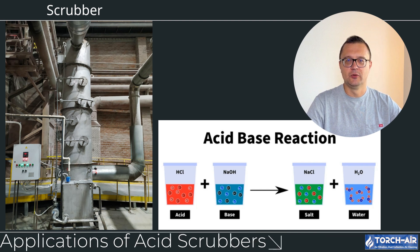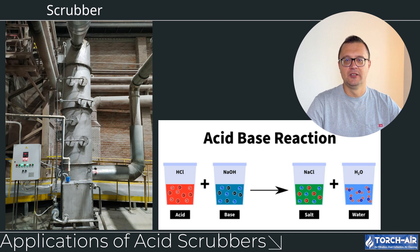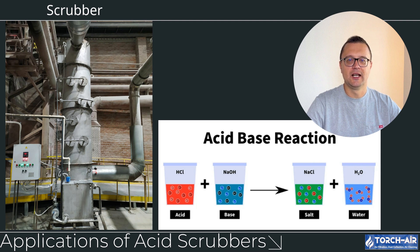Applications of acid scrubbers. Acid scrubbers are used in various industries that produce harmful acid gases during manufacturing processes, including: chemical processing plants for the removal of HCl and other acidic emissions; power plants for SO2 removal from flue gas; metal finishing, where HF and HCl are emitted during pickling and etching processes; and waste incineration, to capture acidic gases produced during the combustion of waste materials.